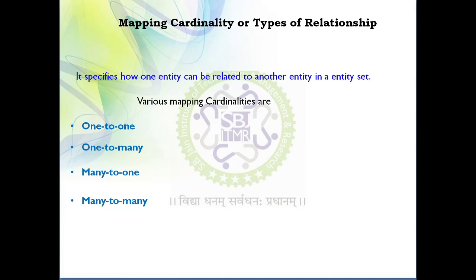The next topic is types of relationship. A relationship represents the kind of association between two or more entities. There are four types of relationships: one-to-one, one-to-many, many-to-one, and many-to-many. We will discuss all of these one by one.